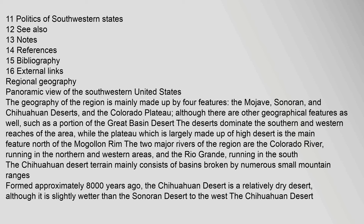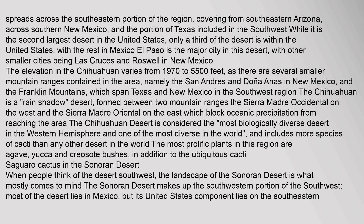The two major rivers of the region are the Colorado River, running in the northern and western areas, and the Rio Grande, running in the south. The Chihuahuan Desert terrain mainly consists of basins broken by numerous small mountain ranges formed approximately 8,000 years ago. It is a relatively dry desert, although slightly wetter than the Sonoran Desert to the west. The Chihuahuan Desert spreads across the southeastern portion of the region, covering from southeastern Arizona, across southern New Mexico, and the portion of Texas included in the southwest. While it is the second largest desert in the United States, only a third of the desert is within the United States, with the rest in Mexico.